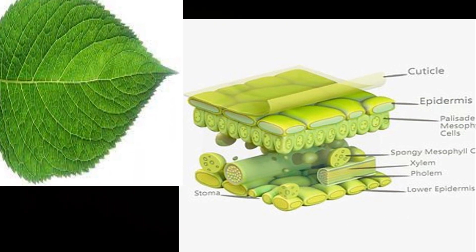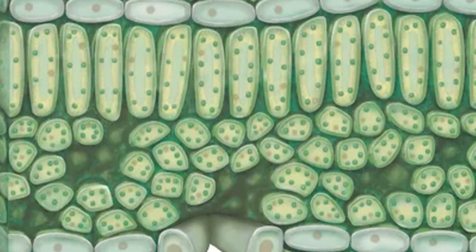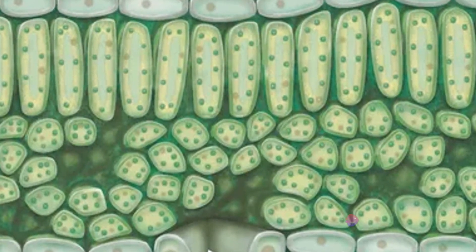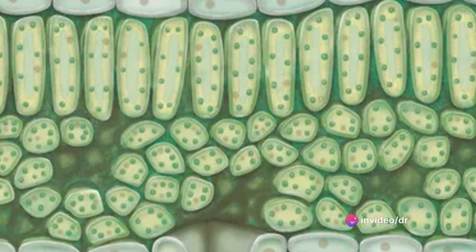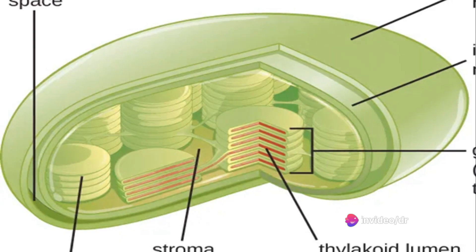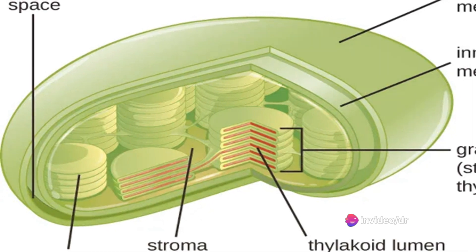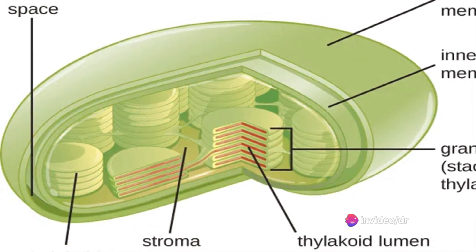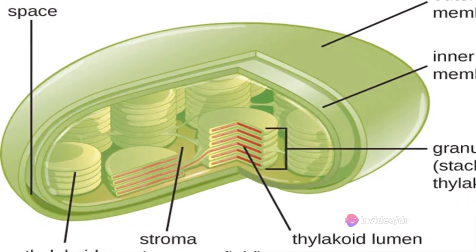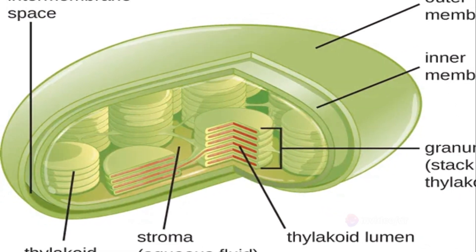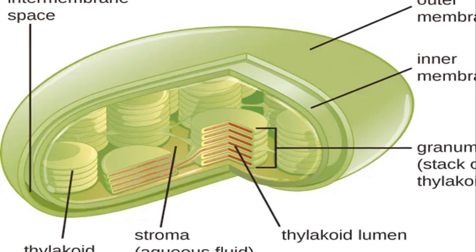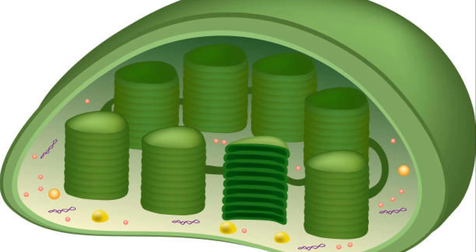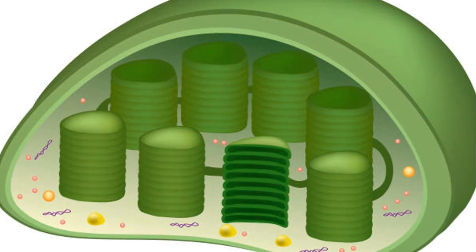The whole process takes place in the middle layer of leaf tissue called mesophyll cells. Mesophyll cells contain the active site of photosynthesis called the chloroplast. Chloroplasts are disc- or oval-shaped double membrane organelles.